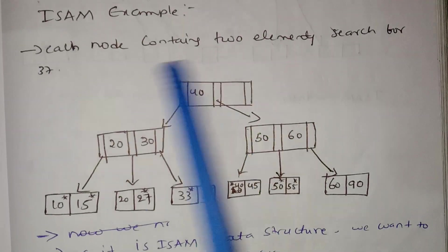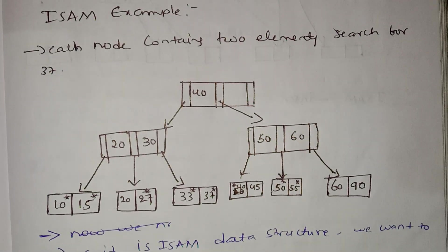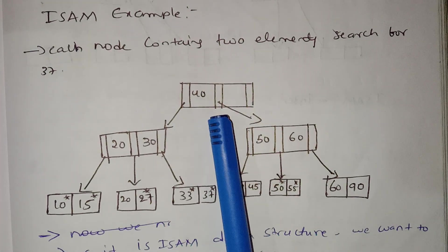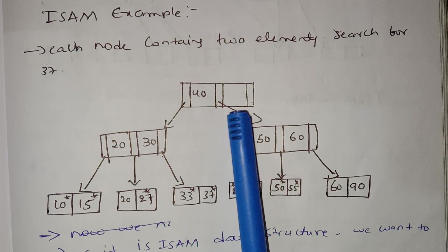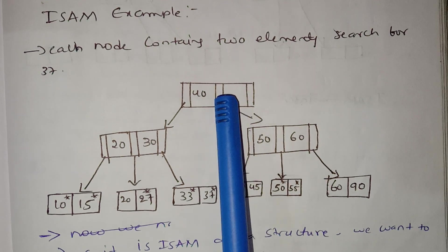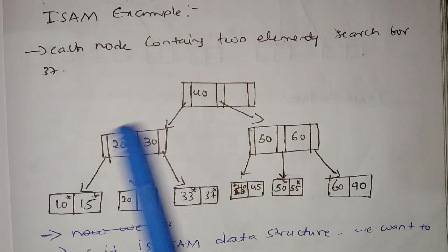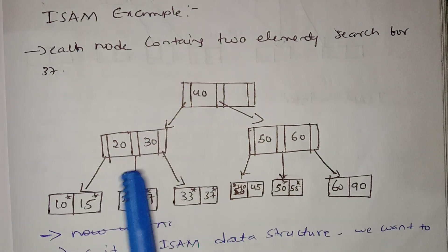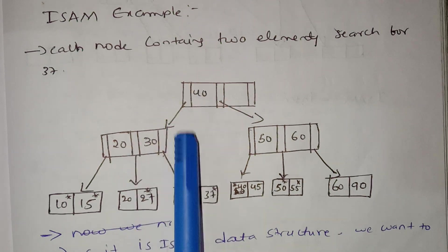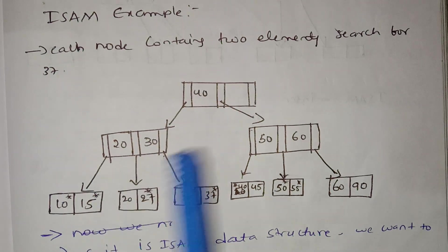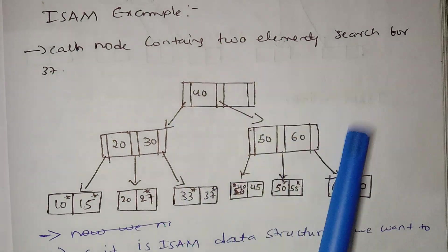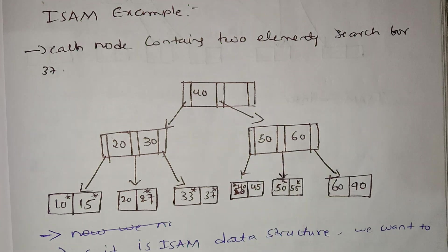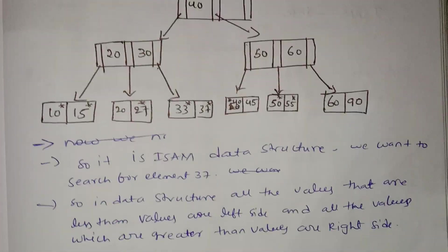In this data structure, we have 40 at the root. Values less than 40 go to the left side, and values greater than 40 go to the right side.